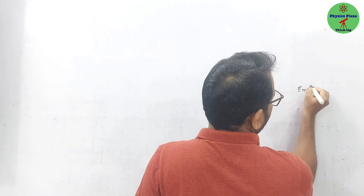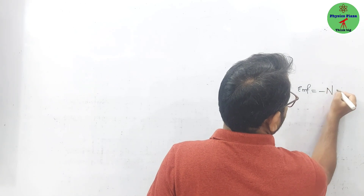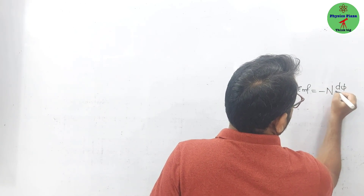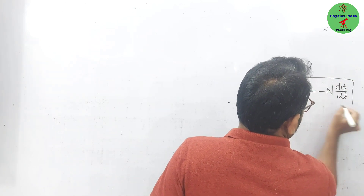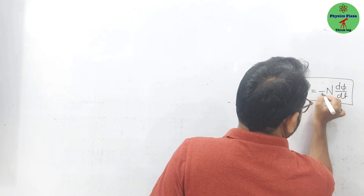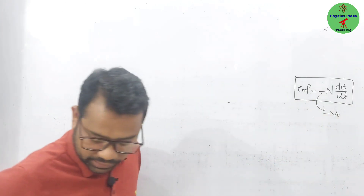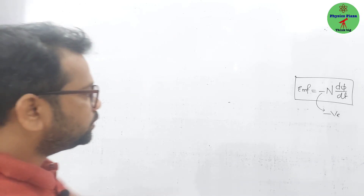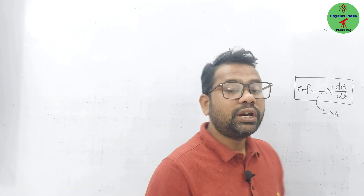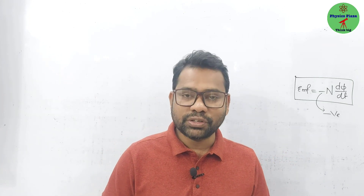In the last class we arrived at: EMF = -N × dΦ/dt. The question is, what does this negative sign mean? Why is it included in the formula? About this only we are going to discuss children — in order to find the direction of induced current.